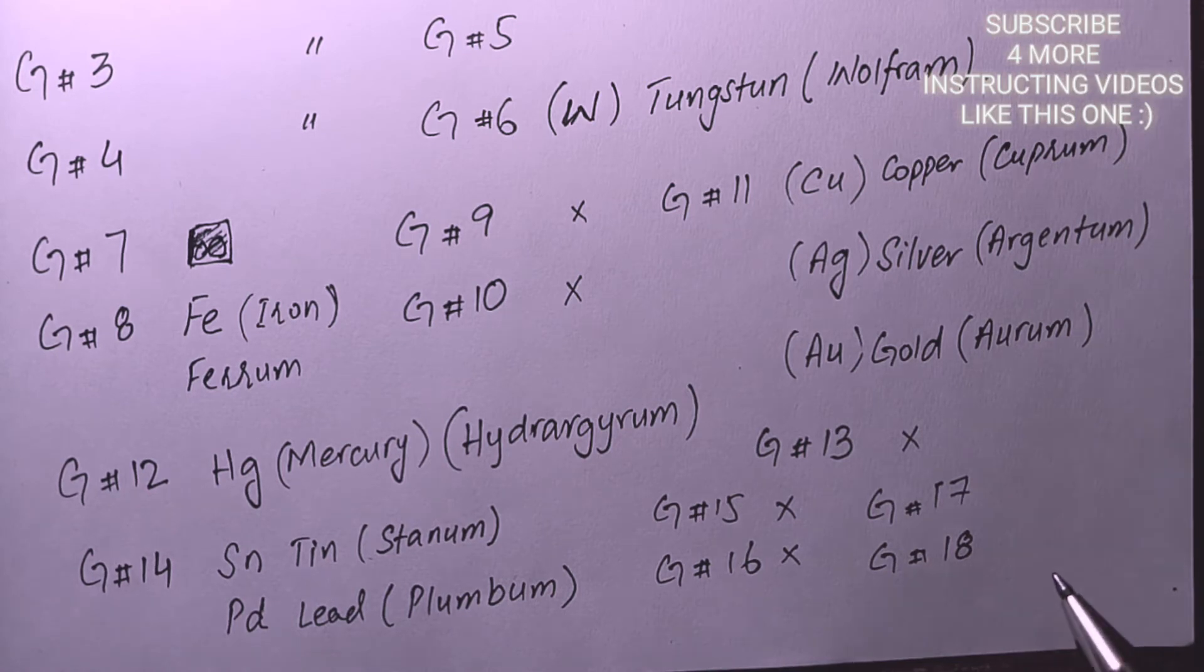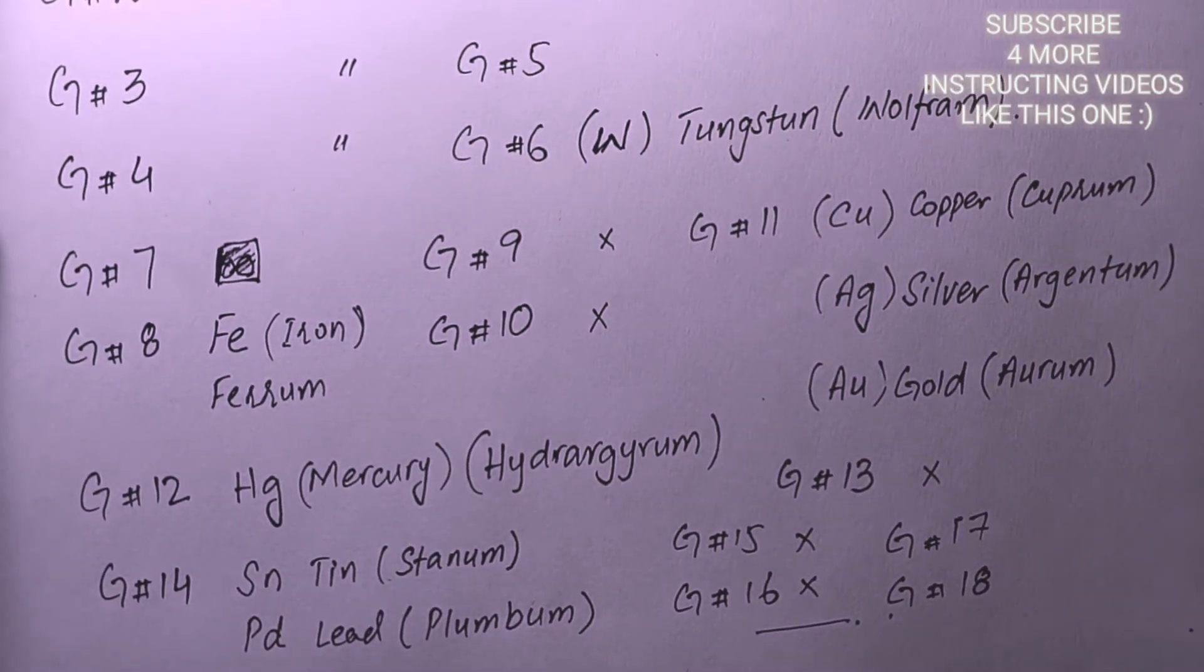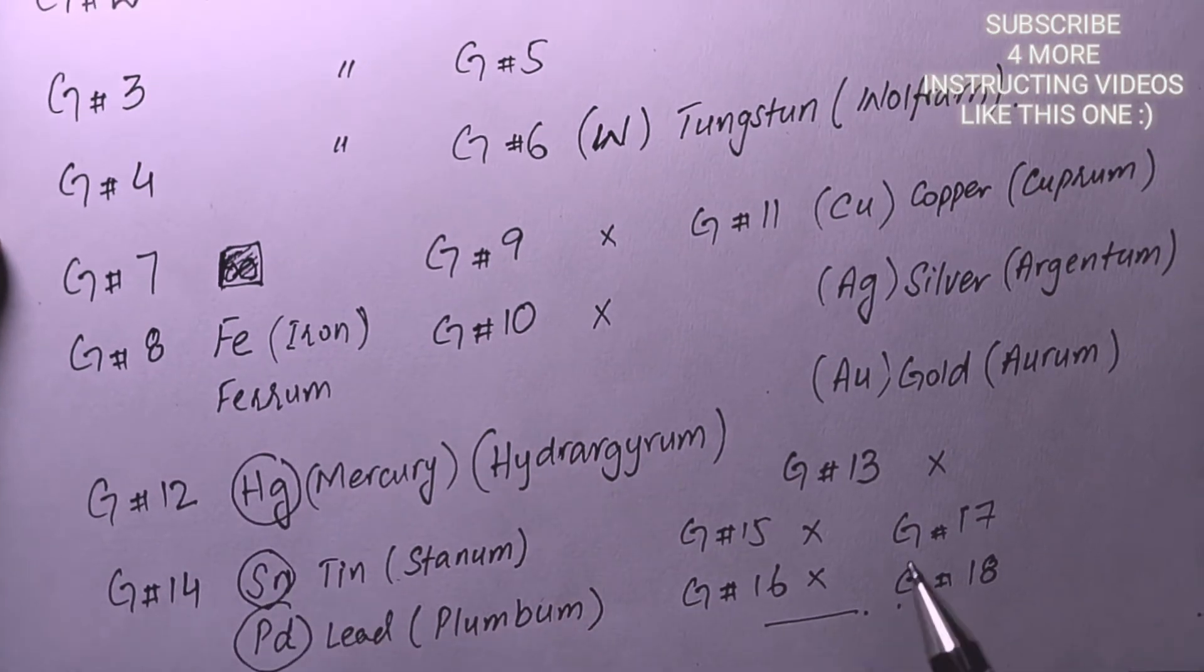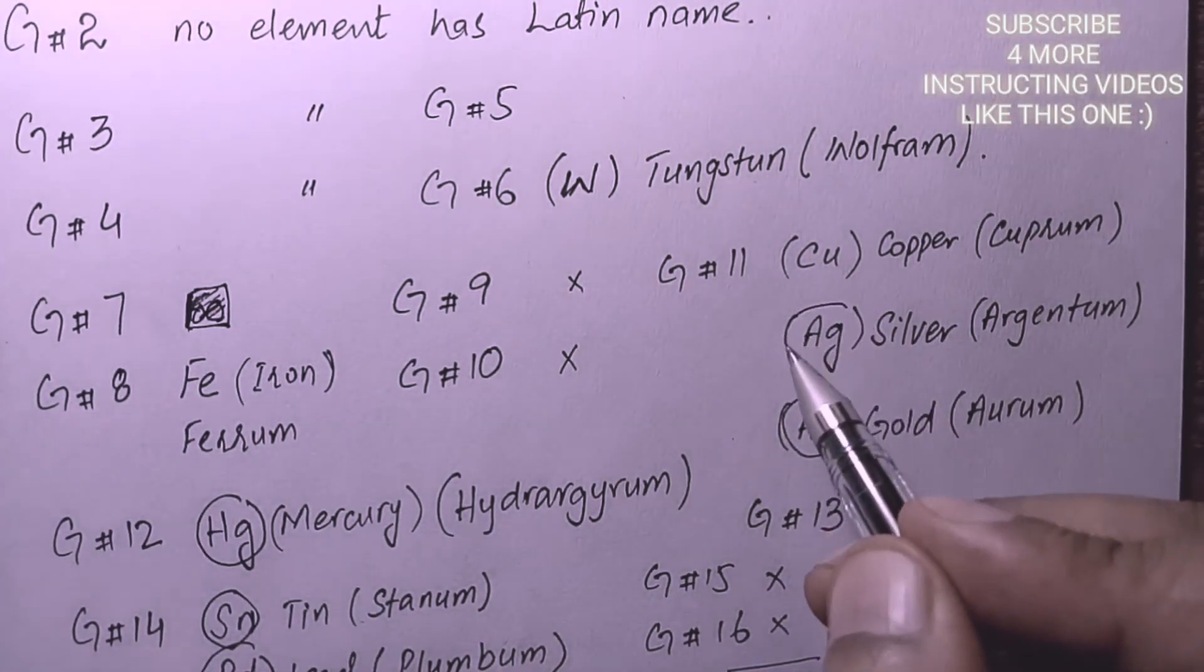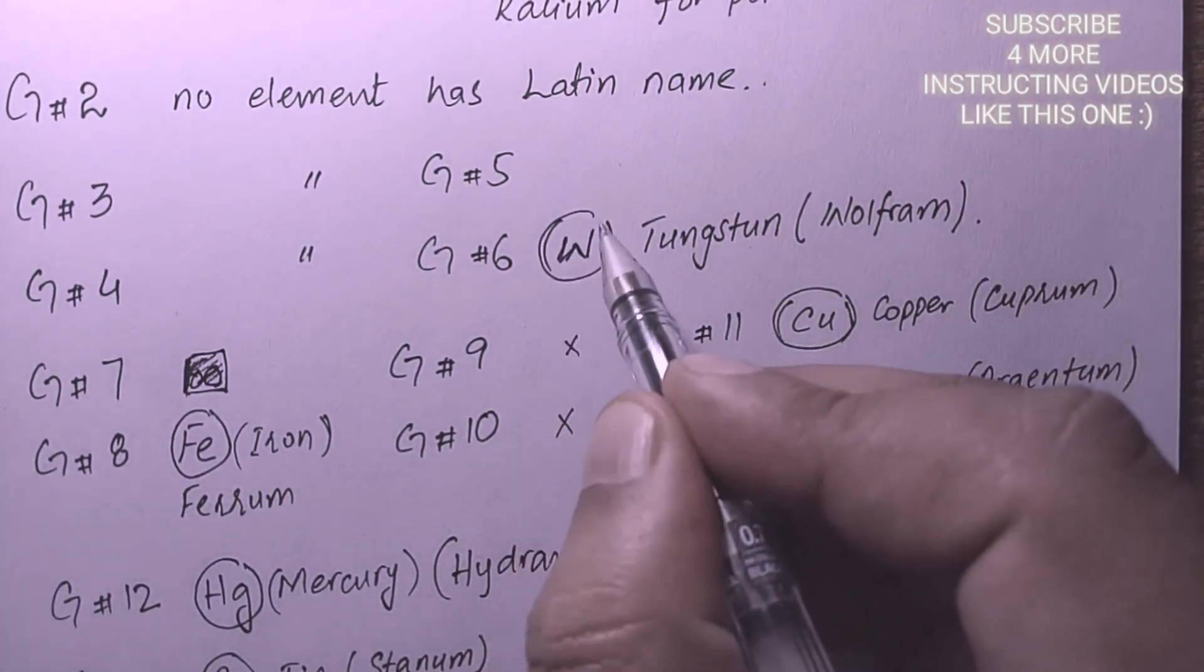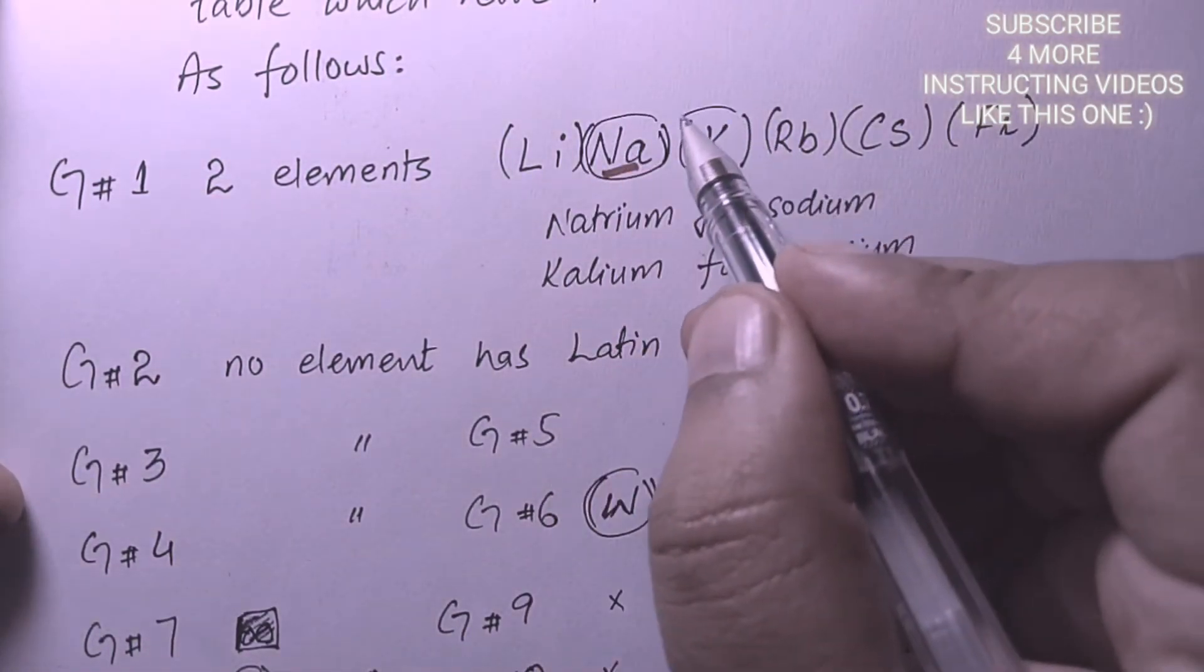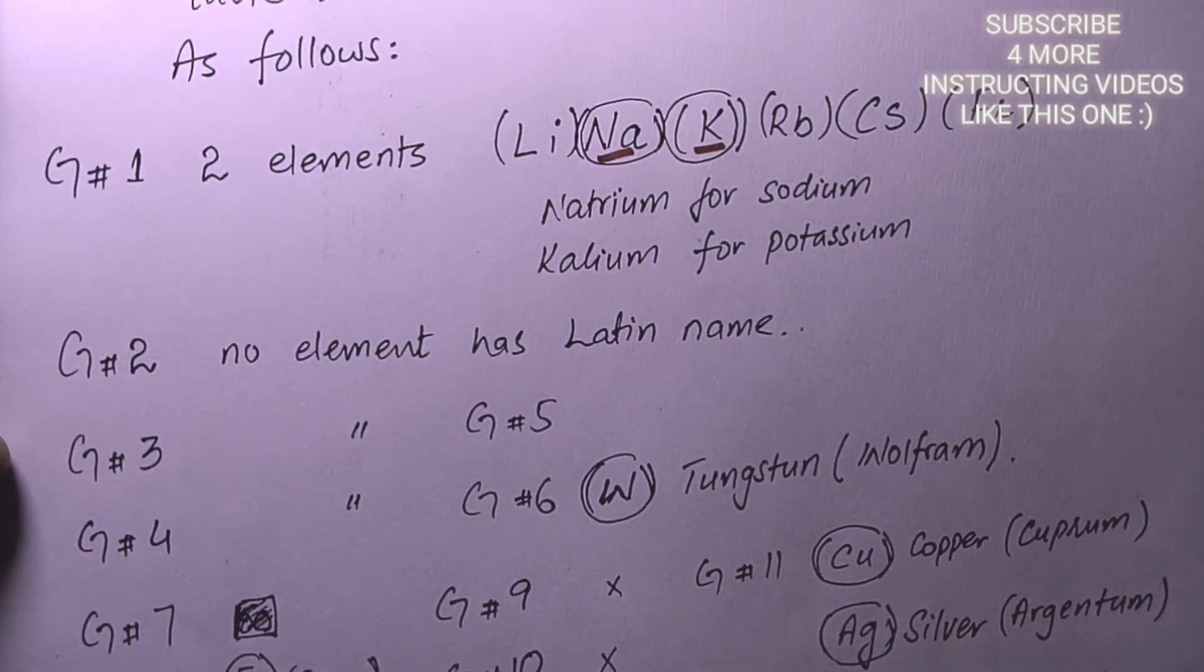As I told you, at the end of my video I'm going to let you know how many Latin named elements are there. Let's count them: 1, 2, 3, 4, 5, 6, 7, 8, 9, 10. So till now we are talking about 10 elements.